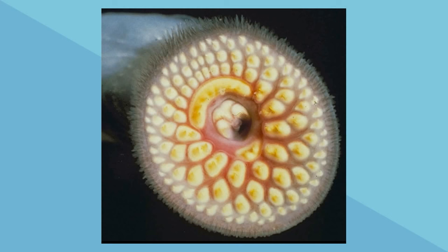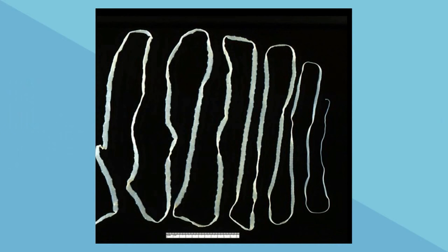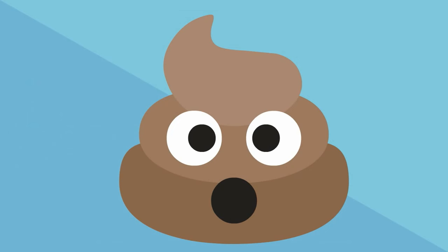The next type of parasite are helminths, or worms. There are several types — roundworms, flukes, and tapeworms. Many of these worms, such as a roundworm or tapeworm, live inside the intestine of an animal. The animal uses the restroom, the feces goes into the water, another animal drinks the water, and then this parasite starts living inside their stomach.